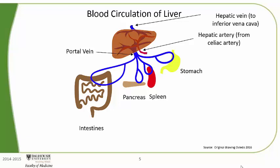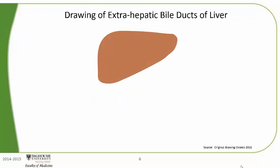Let's go on to the bile ducts. Here is the liver. Here are the gallbladder and bile ducts. The purpose of the gallbladder is to store bile. I have drawn these as appearing behind the liver, since they are located on the posterior and inferior regions of the liver. The purpose of the bile ducts is to transport bile from the liver to the gallbladder and duodenum.